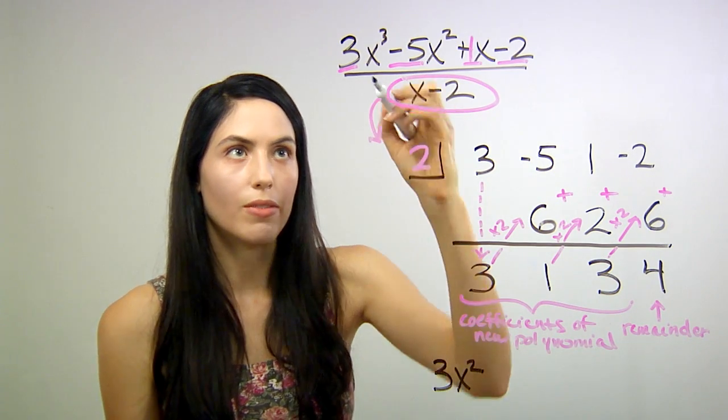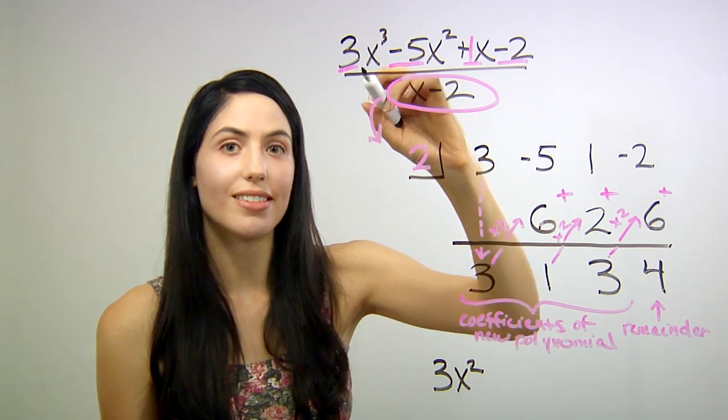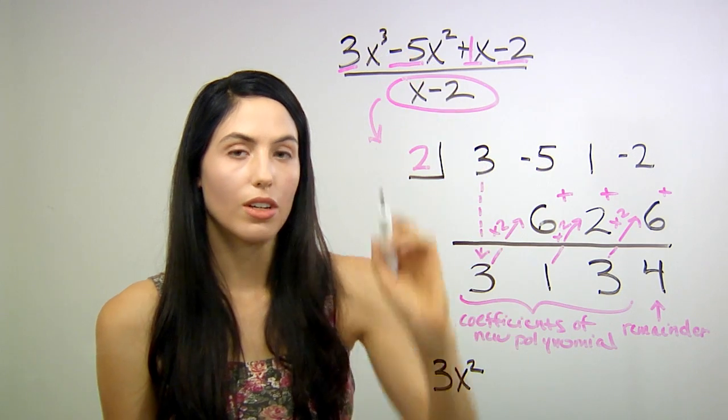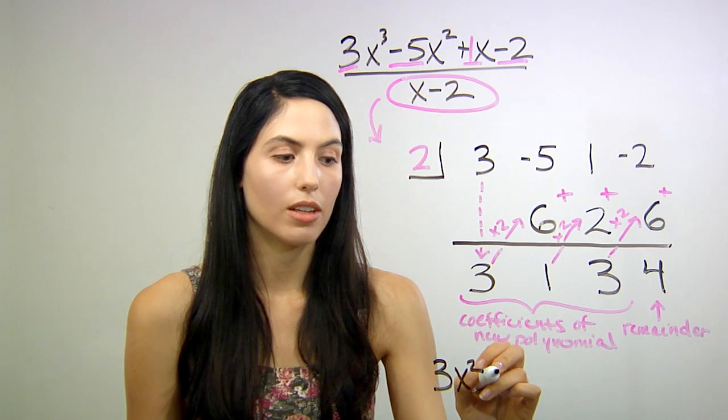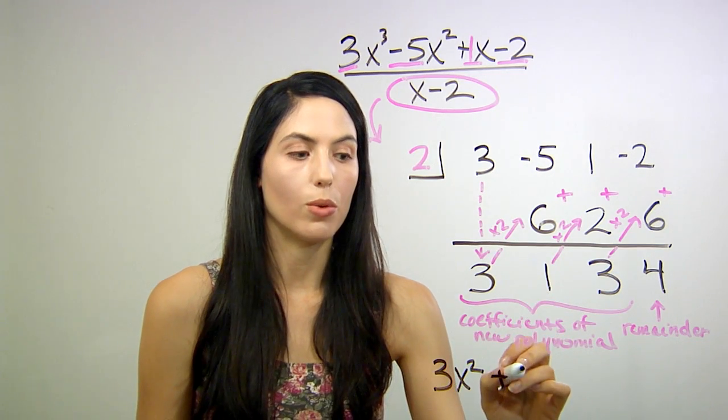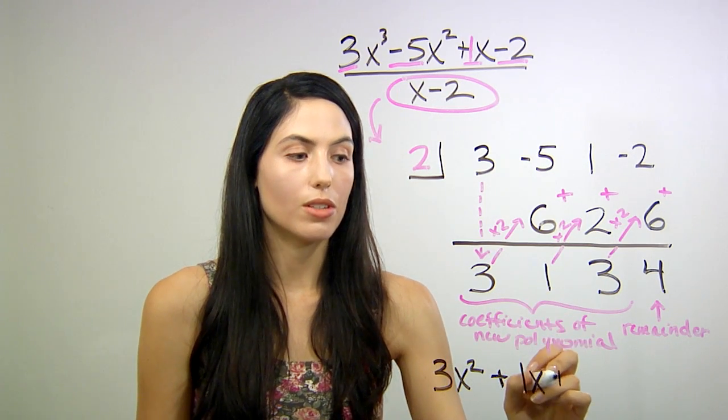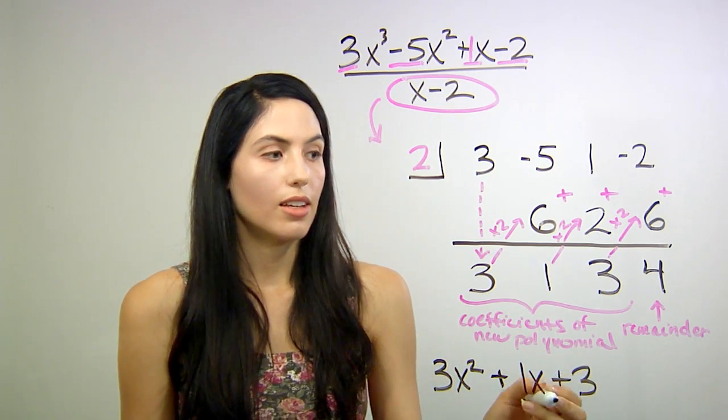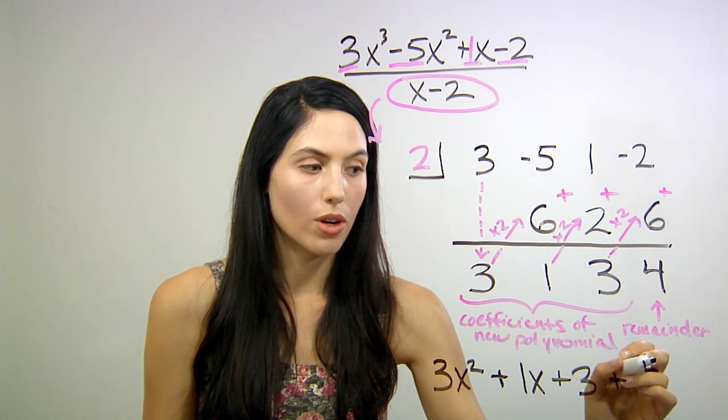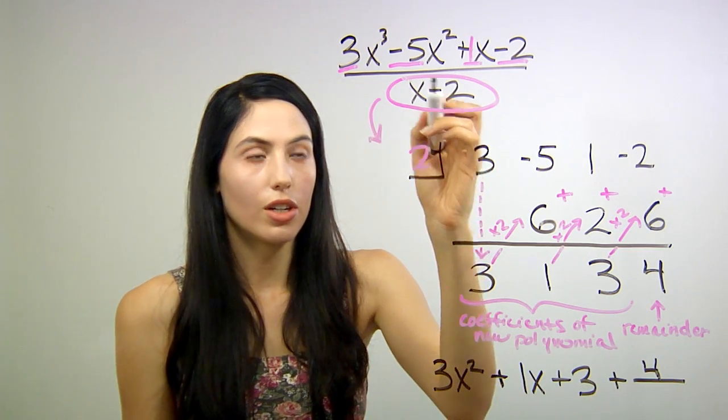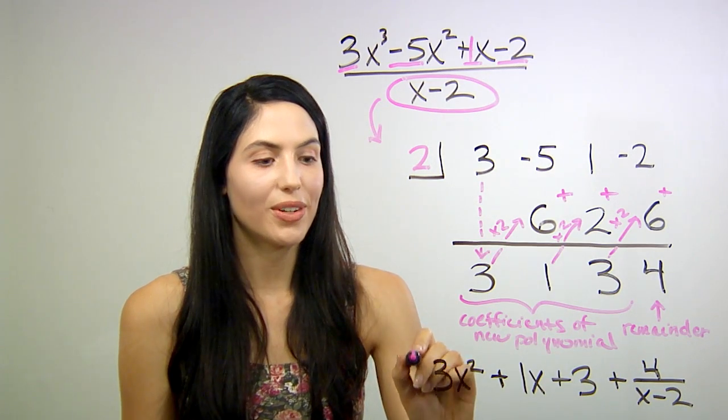This first term will always have an x power one less than what you started with originally. Since our highest x power was x cubed, our answer is going to start with an x squared term. So 3x squared plus one term lower would be 1x, x to the first power, plus 3, just a constant. And your remainder, you will just write as 4 over your denominator, x minus 2. And that's your answer.